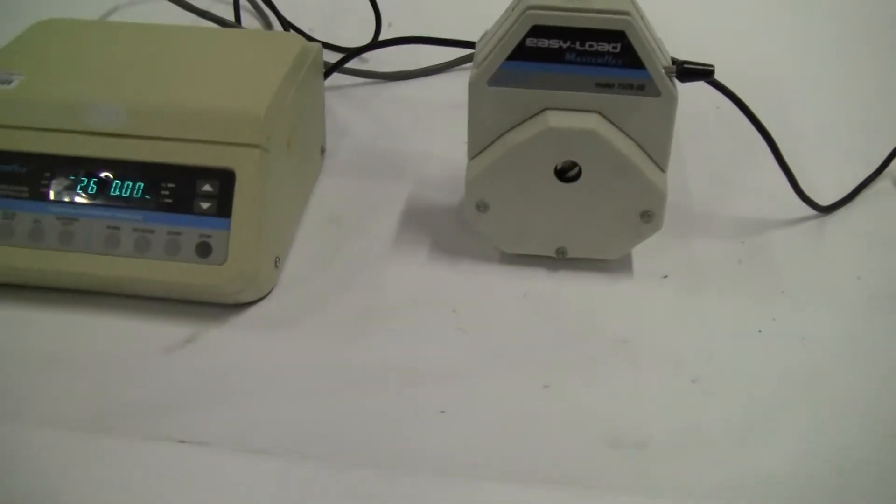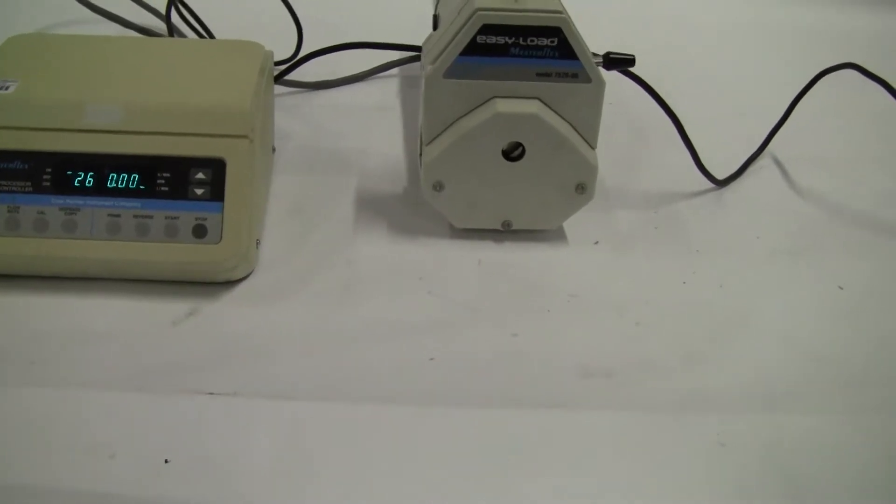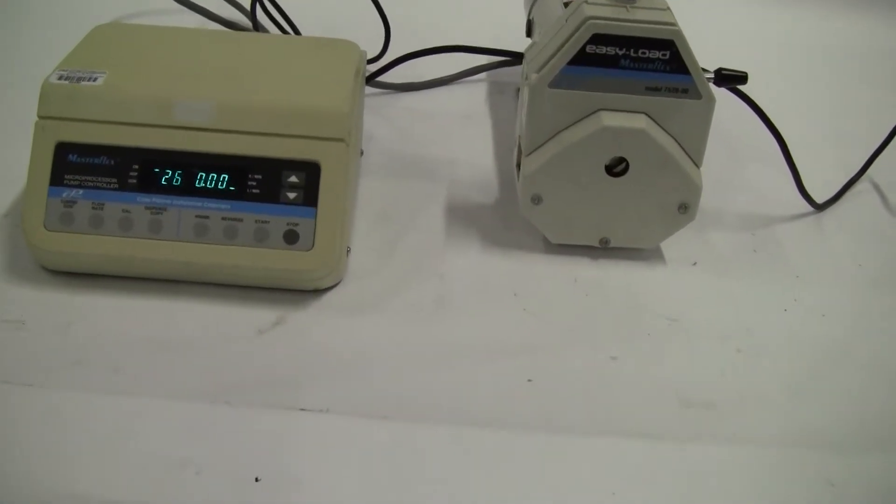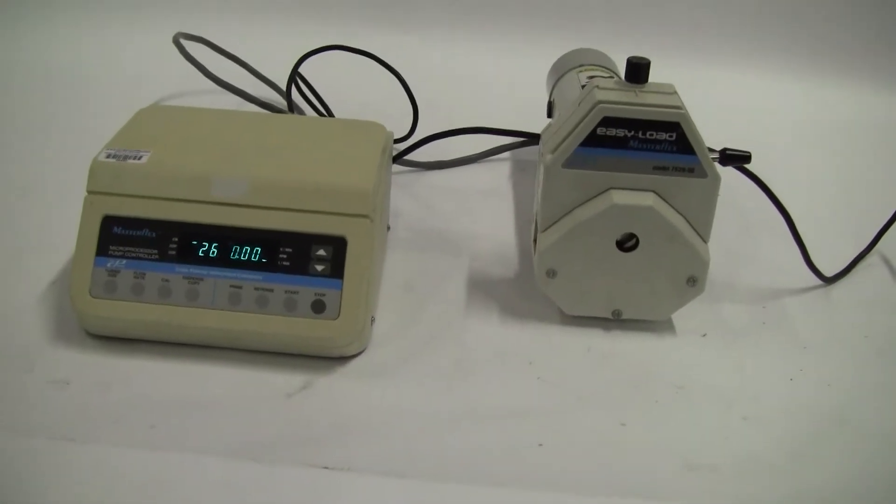You can see it has an RPM range of 20 to 650. The minimum flow rate is 0.01 liters per minute. Maximum flow rate is 13.0 liters per minute with a maximum pressure of 40 psi.